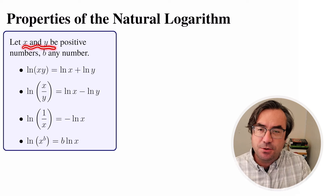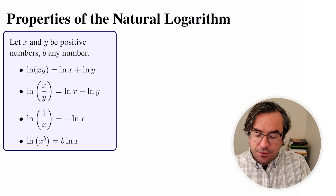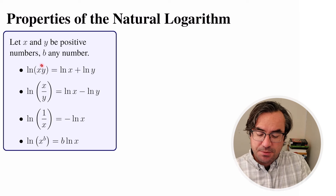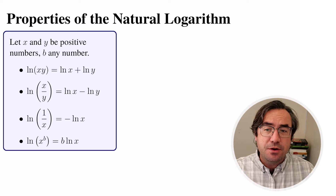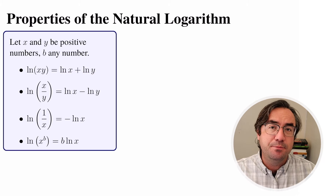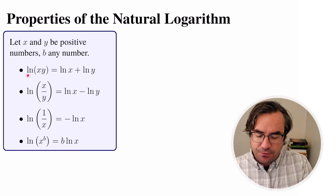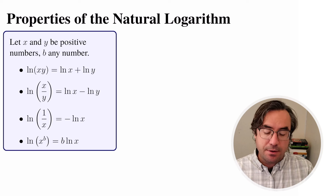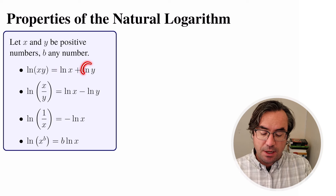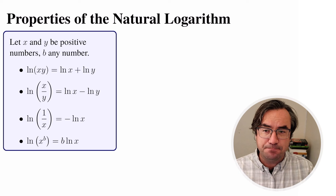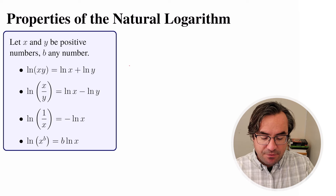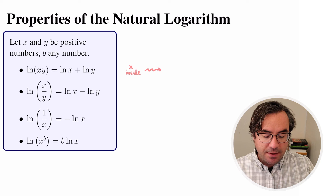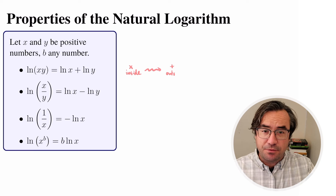We're going to suppose x and y are positive numbers. The first property says that if we have multiplication going on inside the natural log function, we can convert this into addition between two separate log functions. So if we have natural log of x times y, we can break it apart and it becomes natural log of x plus natural log of y.